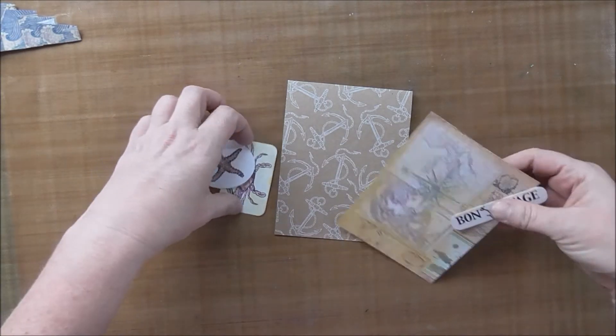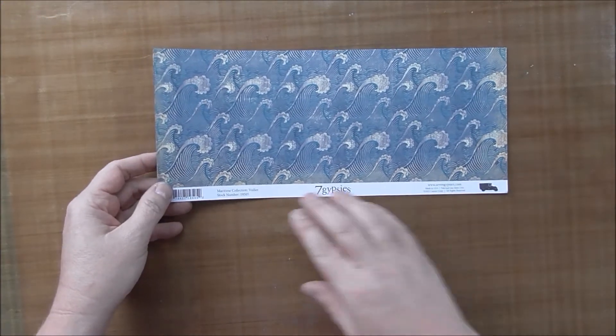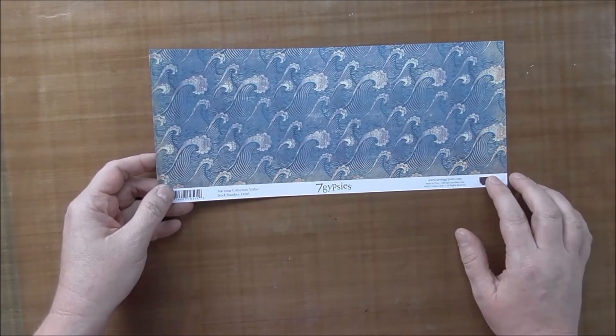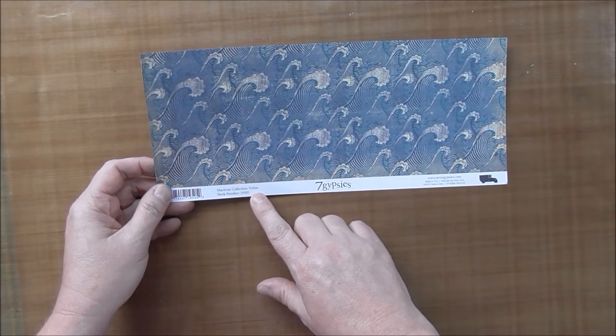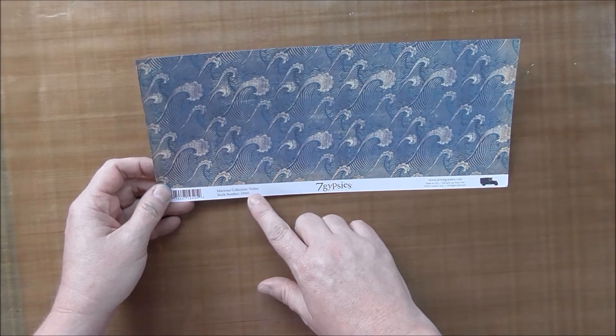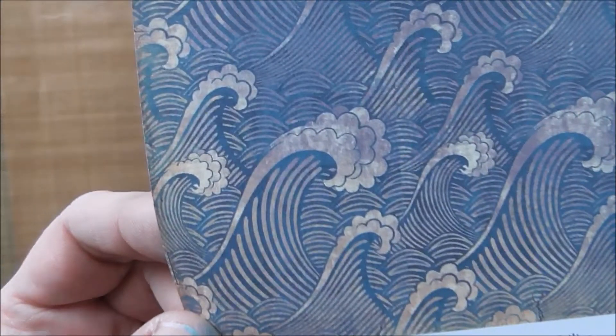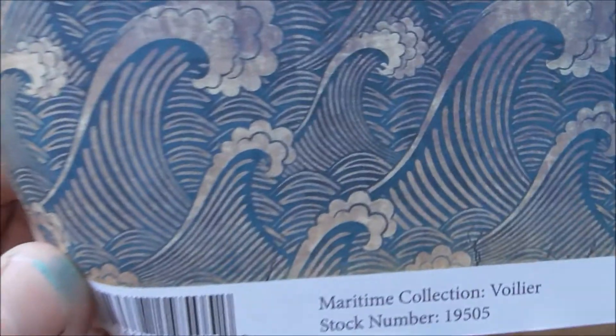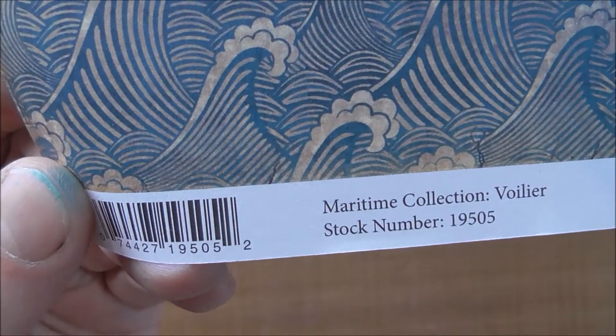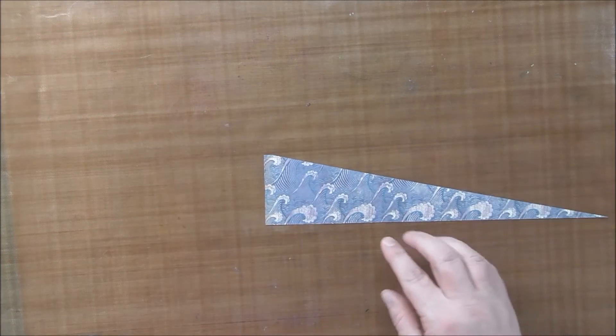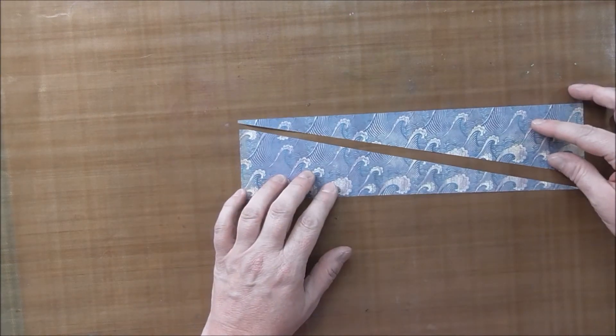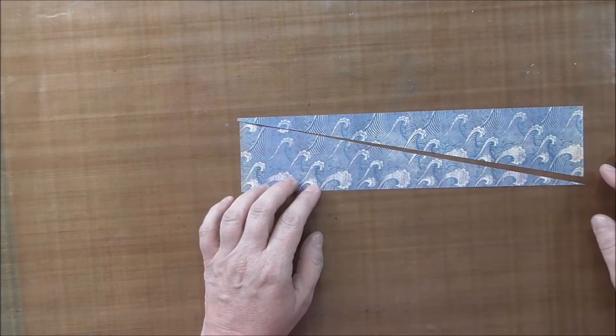So let's get started. The paper that I'm using to make the fold is Seven Gypsies Maritime Collection. So what you do is you cut a piece that is 12 by 2½ inches.